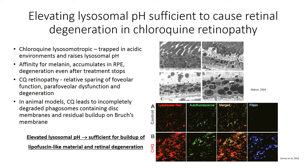In animal models, if we treat RPE cells with chloroquine, we see a substantial increase in the number of lysosomes, lysosomal biogenesis, increased autofluorescence, and increased levels of cholesterol in these lysosomes as evidenced by staining with filipin. This shows us that elevating lysosomal pH is itself sufficient to induce a buildup of lipofuscin-like material and can cause retinal degeneration. While some clinical attributes of chloroquine retinopathy are distinct from AMD, there are sufficient parallels to suggest that lysosomal compromise does play a role in AMD.